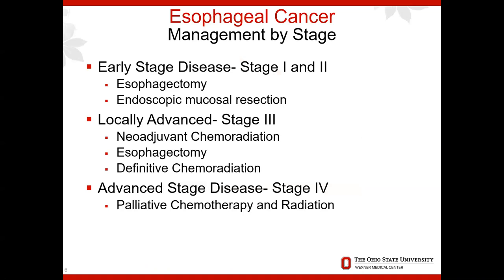The management of esophageal cancer is dictated by the stage. For early stage esophageal cancer, stage 1 and 2, the treatment of choice is esophagectomy — surgical removal of the esophageal tumor with reconstruction. For tumors that are small and isolated to the superficial layer, endoscopic mucosal resection or EMR is an option. For locally advanced esophageal cancer, stage 3, neoadjuvant chemoradiation given before surgery is usually the choice, after which patients proceed to esophagectomy with removal of the tumor and local lymph nodes.